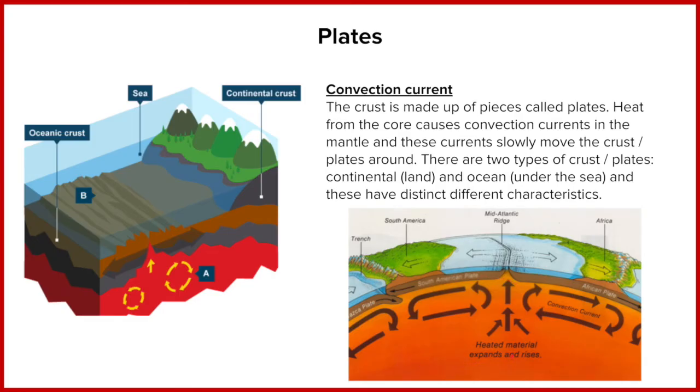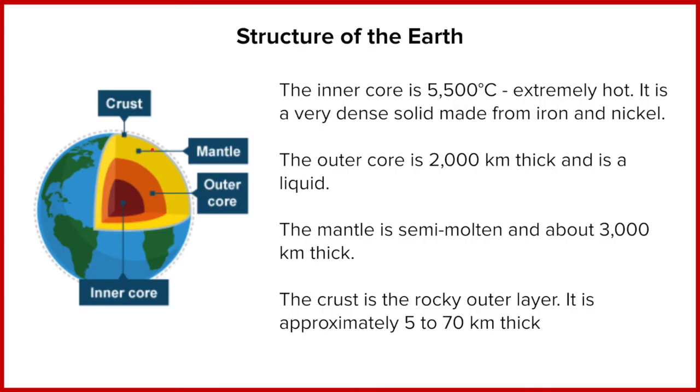At the base of the mantle, we have this interface with the core, which is the hottest part of our planet. Any liquid that is heated up becomes less dense and begins to rise. So at the interface between the mantle and the outer core, this rock is at its hottest and it begins to rise up towards the crust, which is where we get to here. When it reaches the crust, it has two options. It can move on this diagram to the left or to the right.